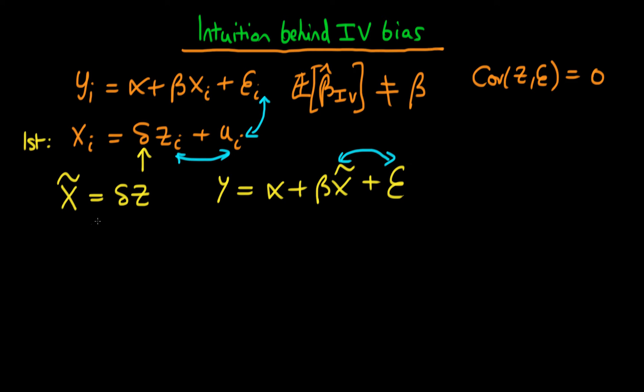But the problem in reality is that we don't actually know this population parameter delta. So we have to estimate that. And when we estimate that in our first stage regression, we get a value of delta hat, which in general doesn't equal delta because of sampling error.